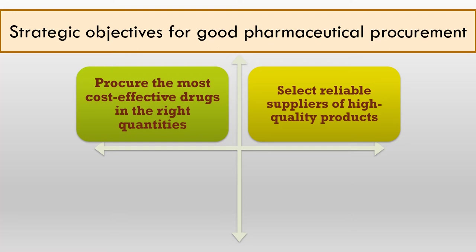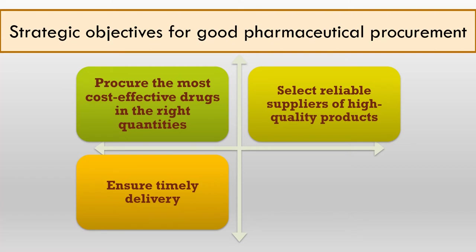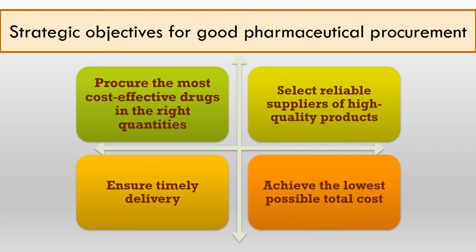The third strategic objective is that the procurement and distribution system must ensure timely delivery of appropriate quantities to central and provincial stores and adequate distribution to health facilities where the products are needed. The fourth objective is that the procurement and distribution system must achieve the lowest possible total cost, considering four main components: the actual purchase price of drug, hidden cost due to poor product quality, poor supplier performance or short shelf life, and inventory holding cost at various levels of the supply and operating cost.